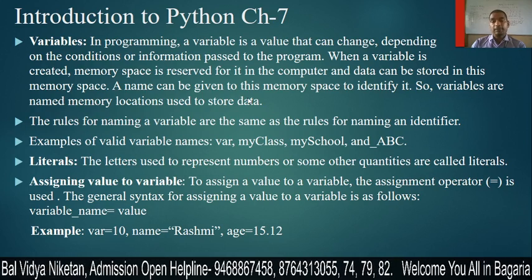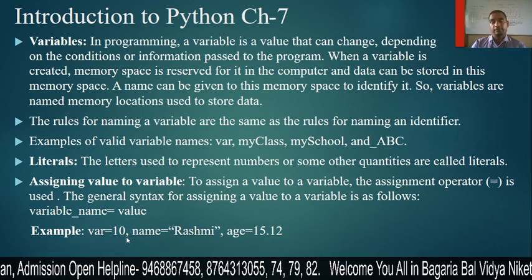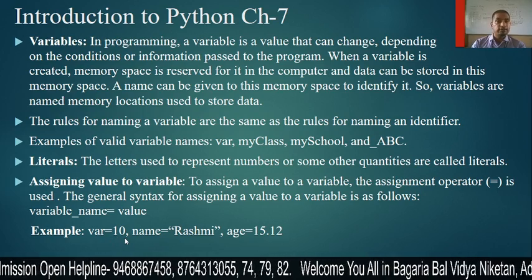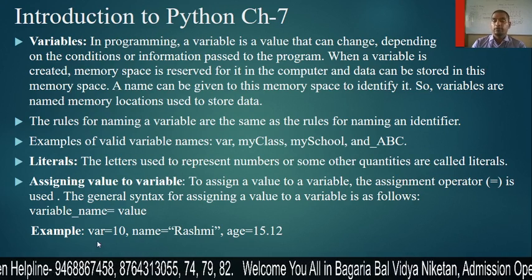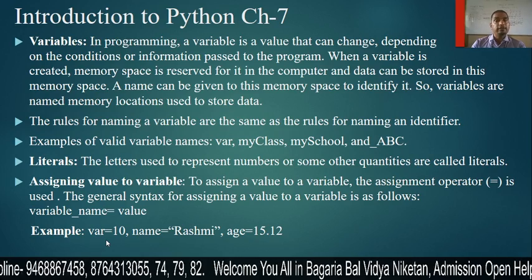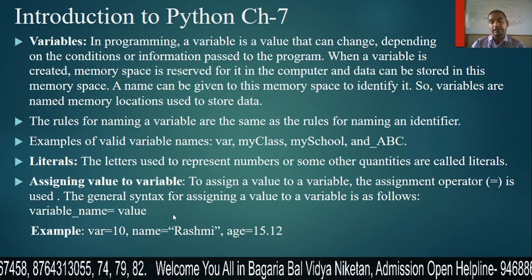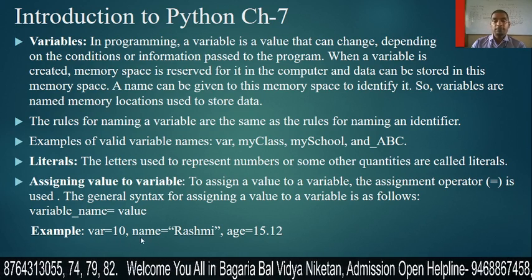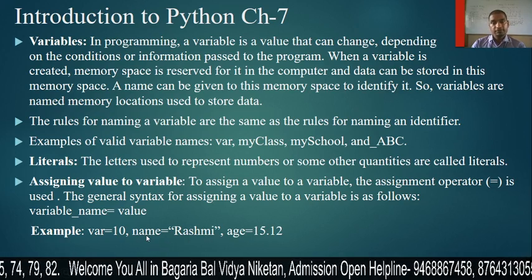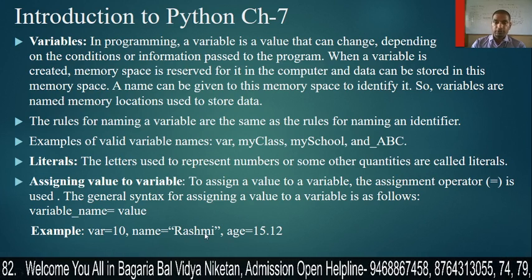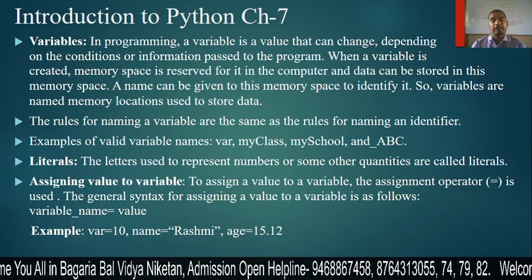For example, VAR is equal to 10 — here 10 is a constant value and VAR is a variable that will store it. In Python, it will link. Similarly, name is equal to rashmi — name is the variable that stores the value rashmi. Rashmi is a string value; string means a collection of characters.